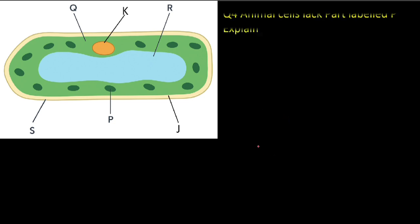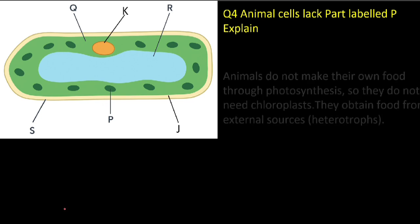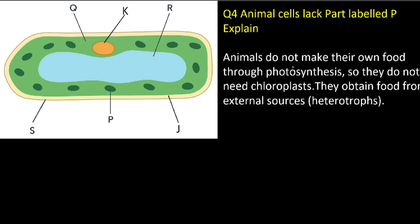Question number four: animal cells lack the part labeled P — explain. P is the chloroplast. Animal cells lack chloroplast because they do not make their own food through photosynthesis, so they do not need chloroplast. They obtain food from external sources — animals feed on already manufactured food; we call them heterotrophs — and therefore they don't need chloroplast.